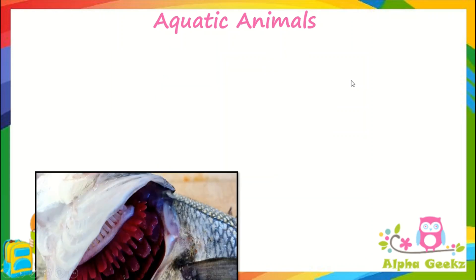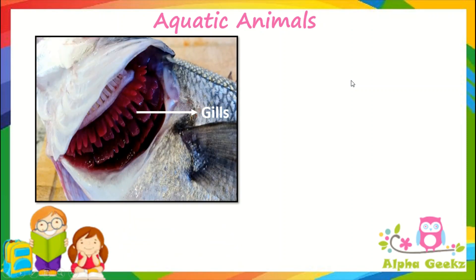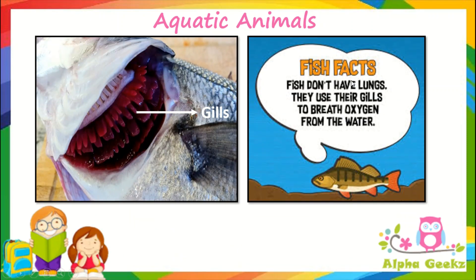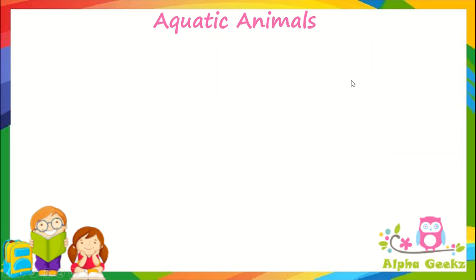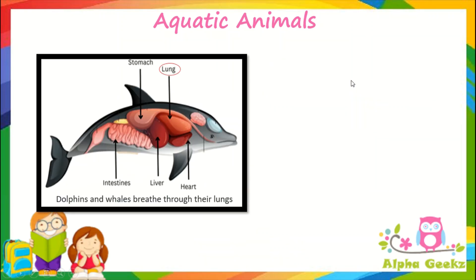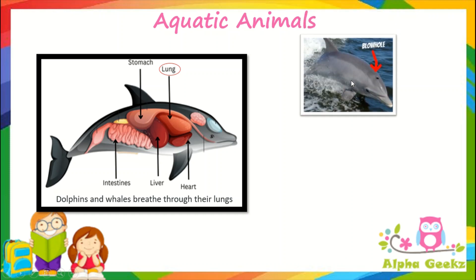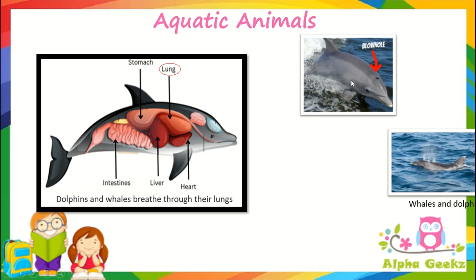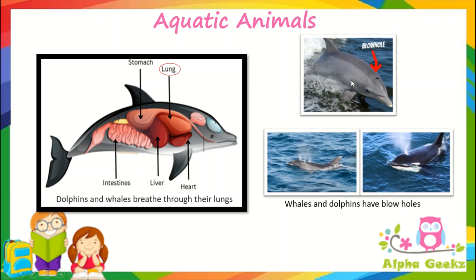Fish have specialized organs called gills, which are used for respiration. Dolphins and whales are aquatic mammals which breathe through their lungs. They come up to the surface of the water to breathe fresh air through their blowholes present on their heads.